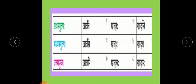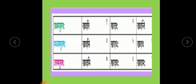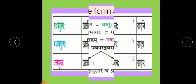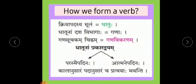These are all the endings: Khadati, Khadataha, Khadanti for Prathama Purusha; Khadasi, Khadataha, Khadatha for Madhyama Purusha; and Khadami, Khadavaha, Khadamaha for Uttama Purusha. These are the endings used for Prathama Purusha, Madhyama Purusha, and Uttama Purusha.